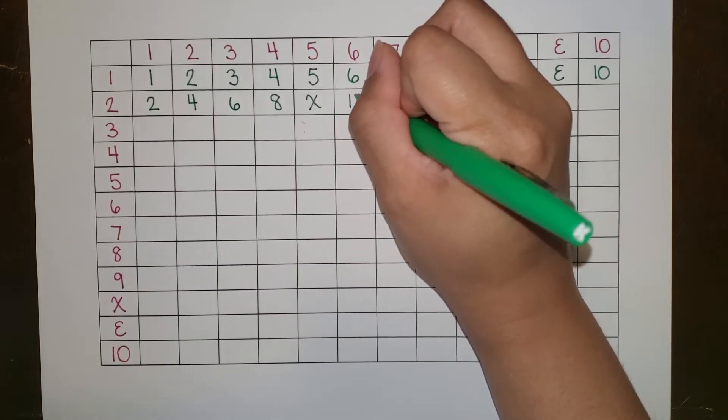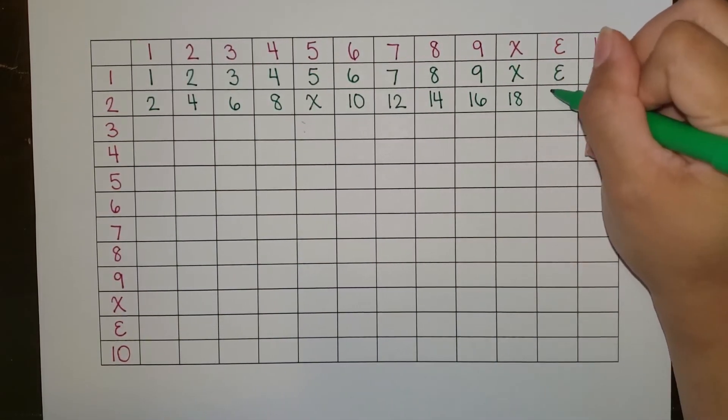We can see they end with two, four, six, eight, deck, zero. And that pattern continues for the next row.